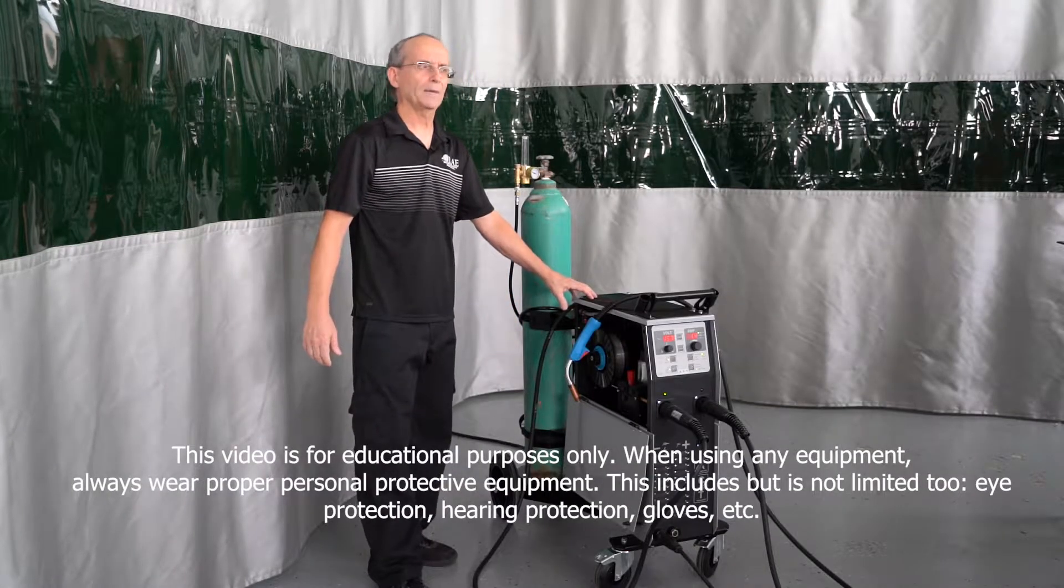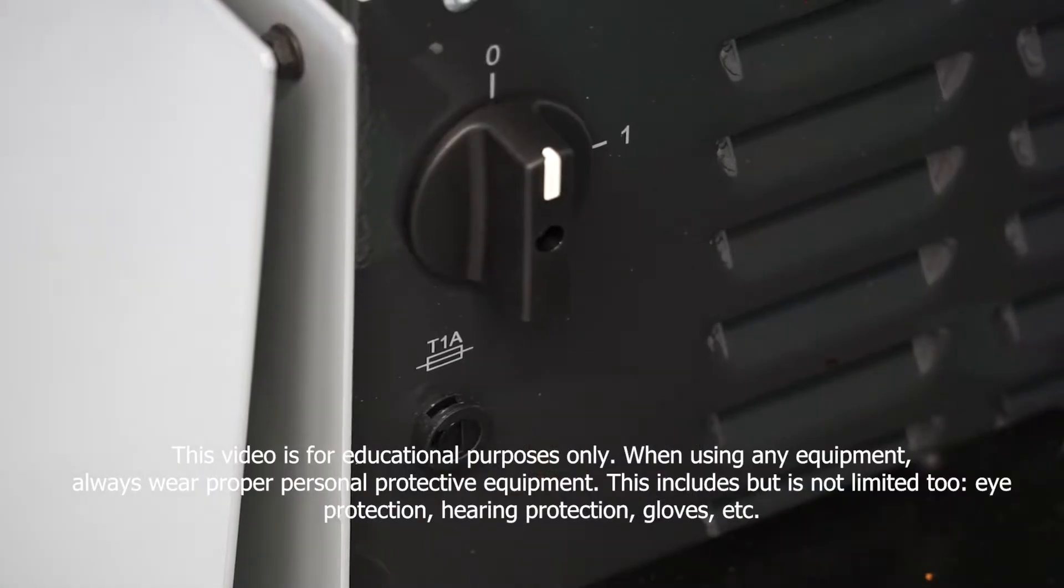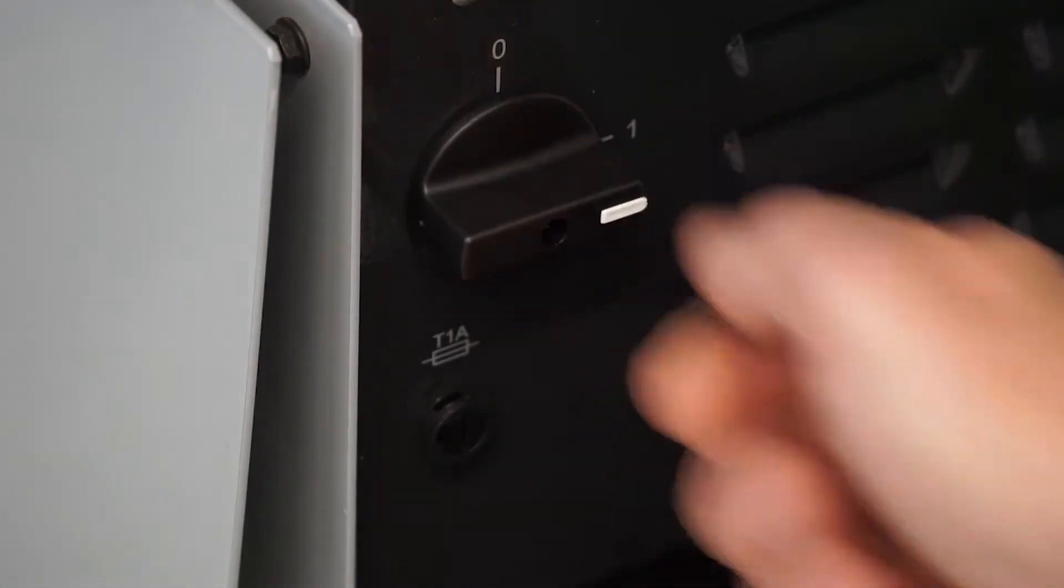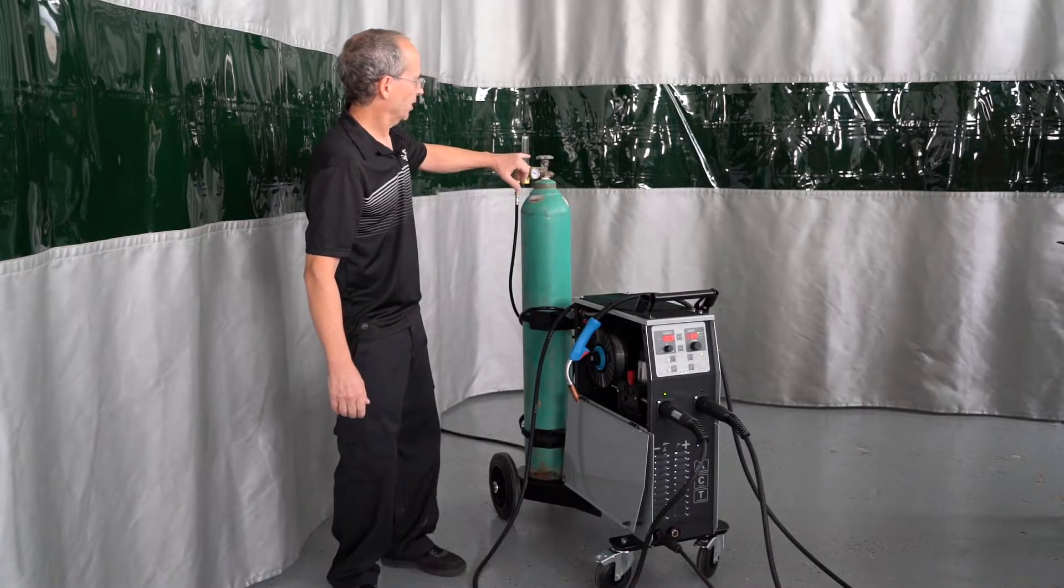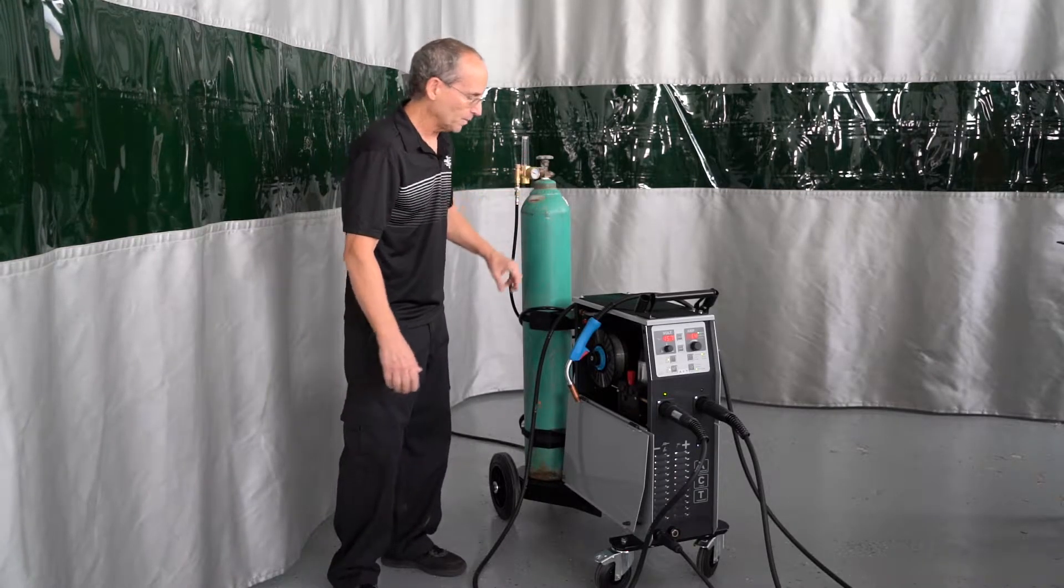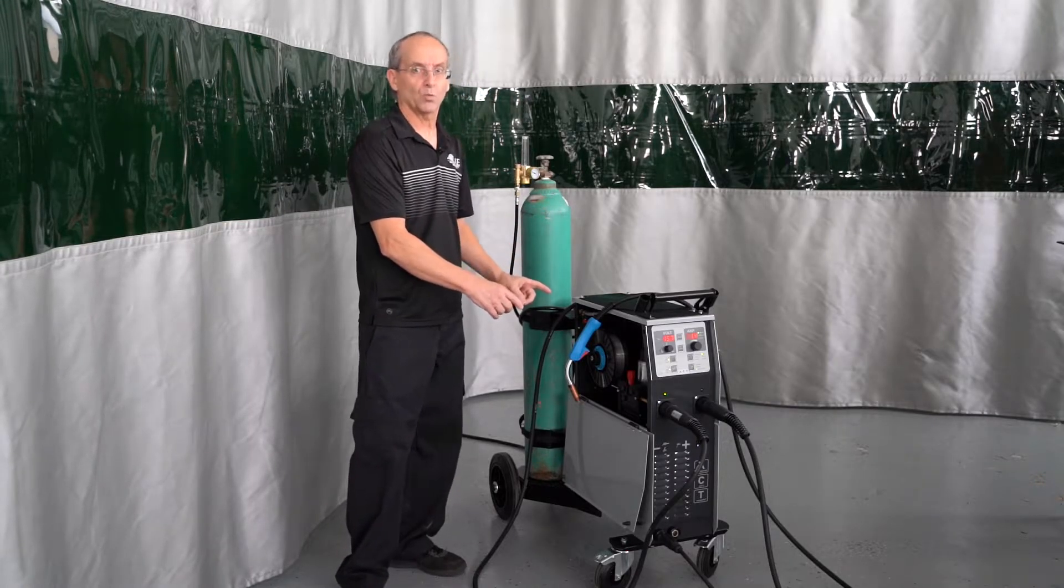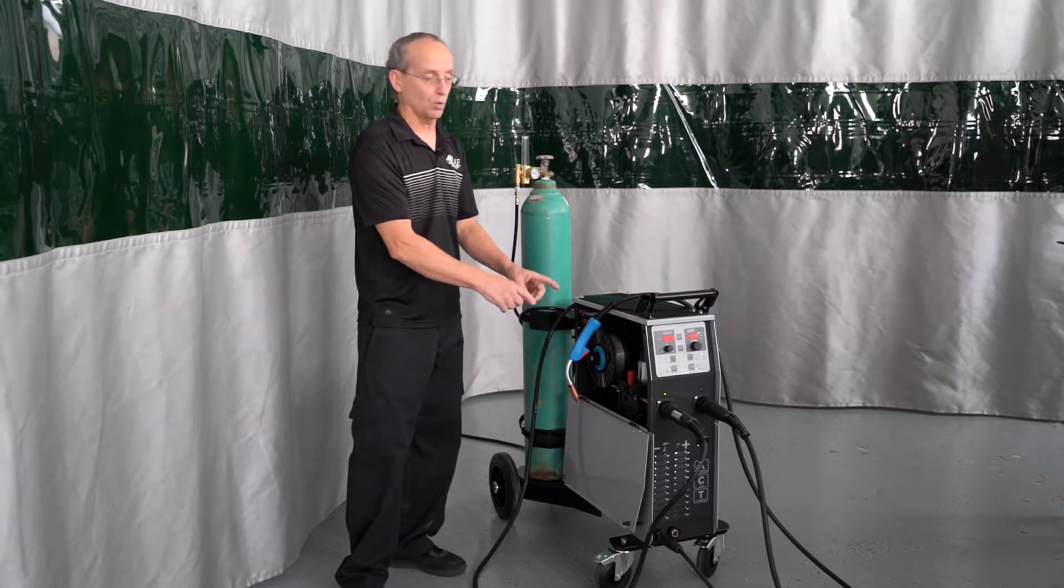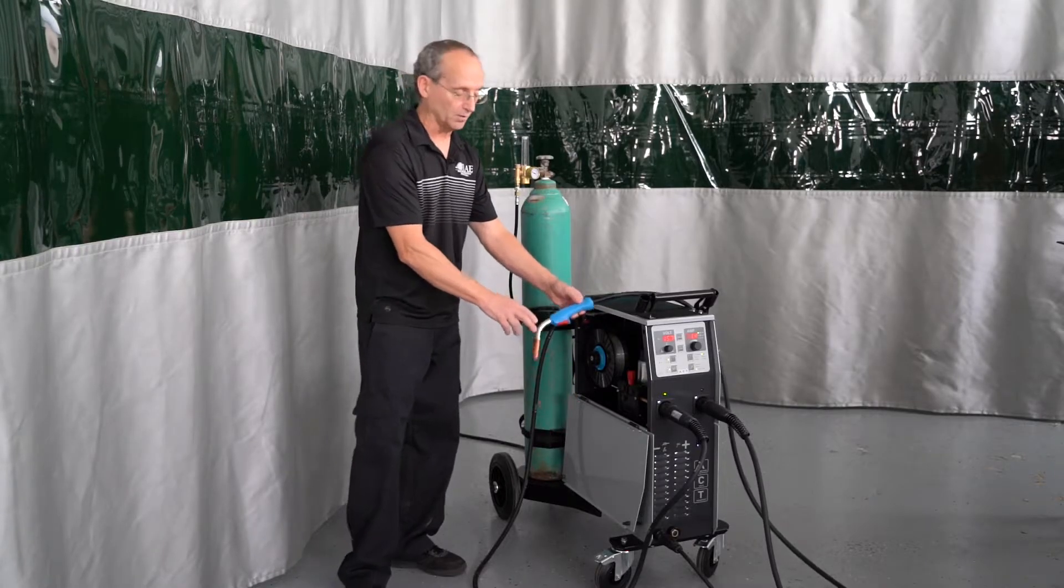Alright, quick start on the IP7. Turn the machine on from the back, make sure your gas is turned on, make sure you have your regulator set for the diameter wire that you're using for the proper gas flow, make sure you have the correct wire in for what you're welding on, the correct size rollers, the correct size tip on the gun.